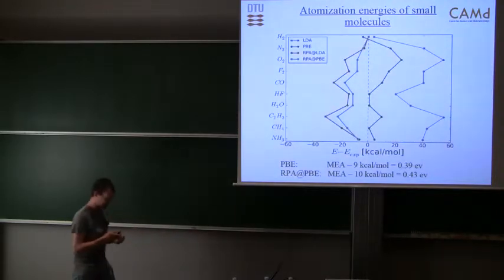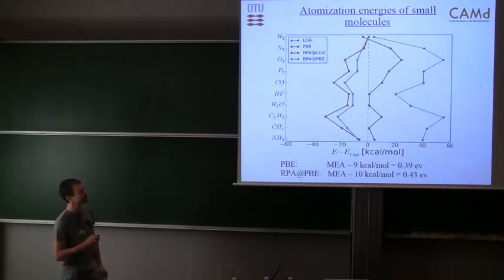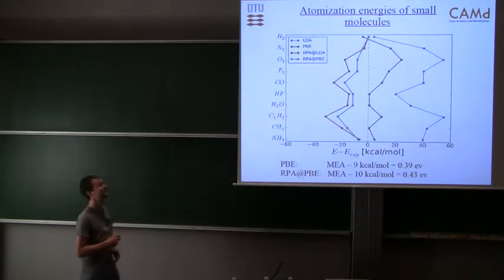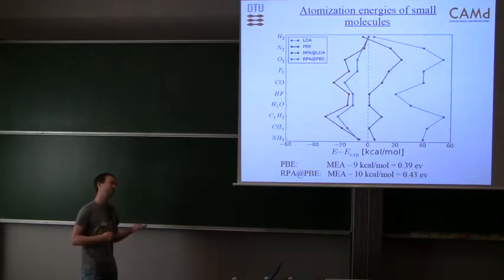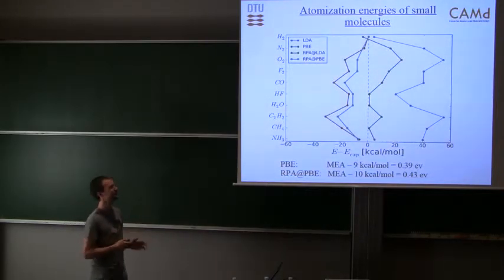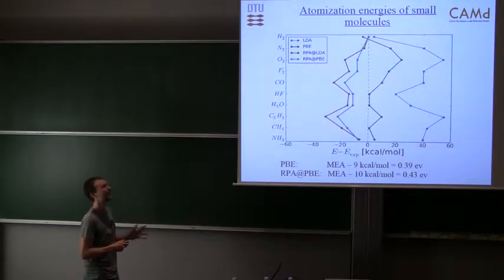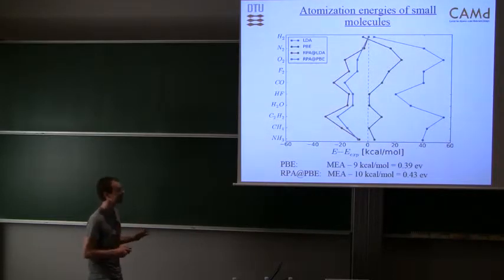If we try to do atomization energies of molecules, the results are not so good. In fact, it's very much comparable to PBE, slightly worse than PBE, and in general RPA tends to underbind. Also, there's a certain dependence on input orbitals you use to evaluate your response function. If you use PBE you get something slightly better than if you use LDA, but it's not very nice that you have this dependency. We would like to have something that's independent of orbitals, or at least have a consistent choice. The consistent choice for RPA would be Hartree-Fock orbitals, but no one is doing that because that gives very poor results.